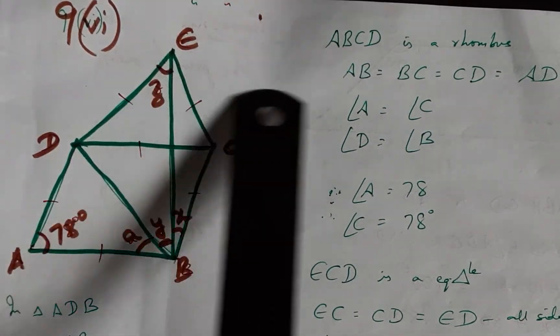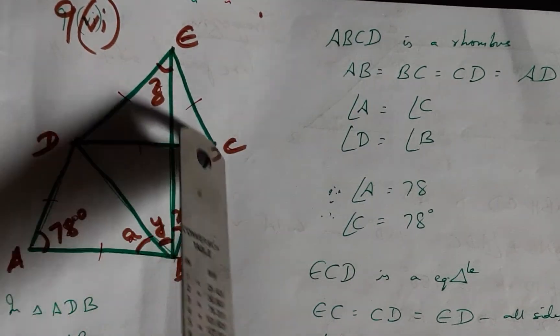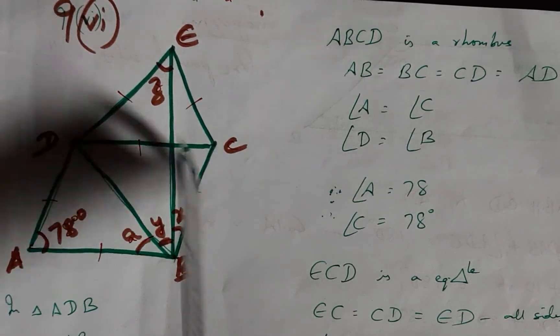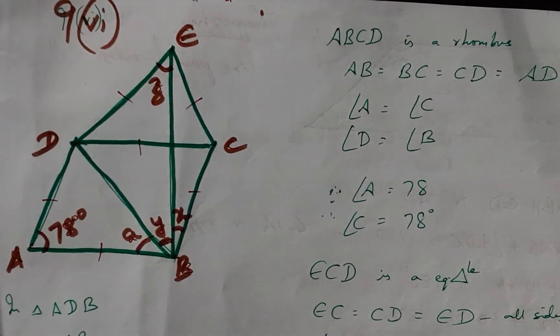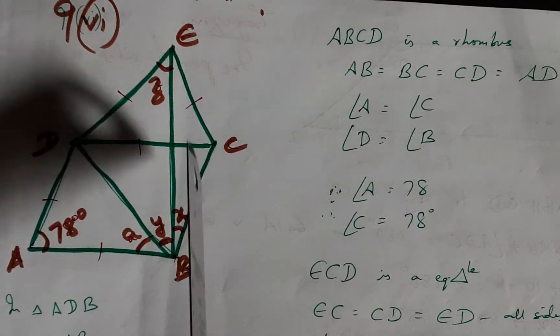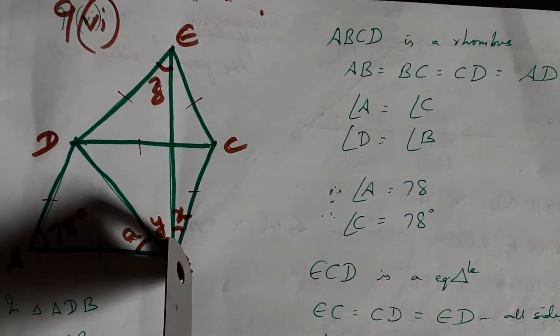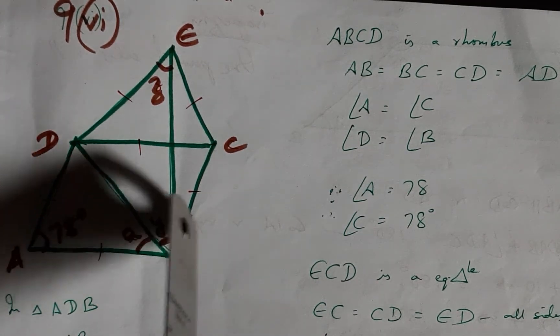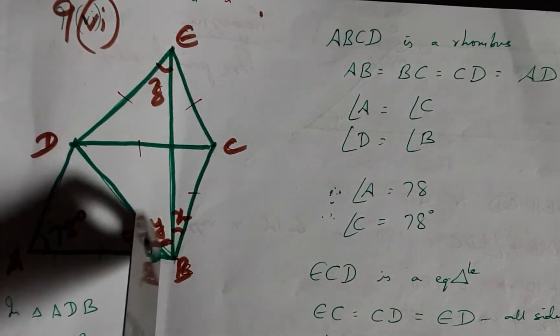The 6th bit of the 9th question says that ABCD is a rhombus, which means all these sides are equal and opposite angles of a rhombus are equal. If angle A is 78 degrees, then angle C will also be 78 degrees, and we are supposed to arrive at Y, X, and Z independently.